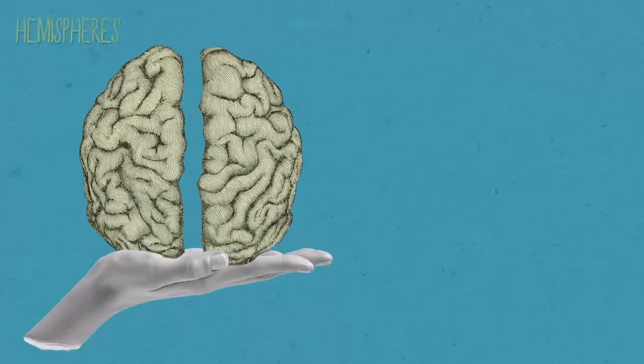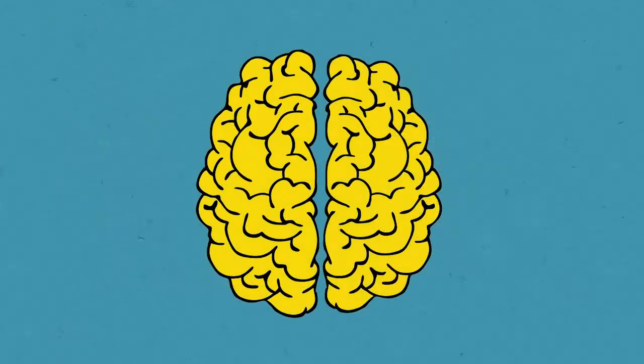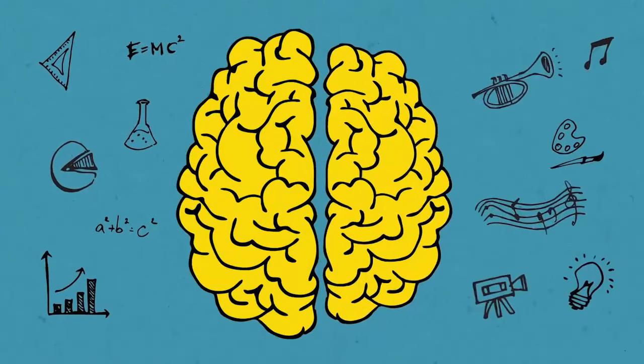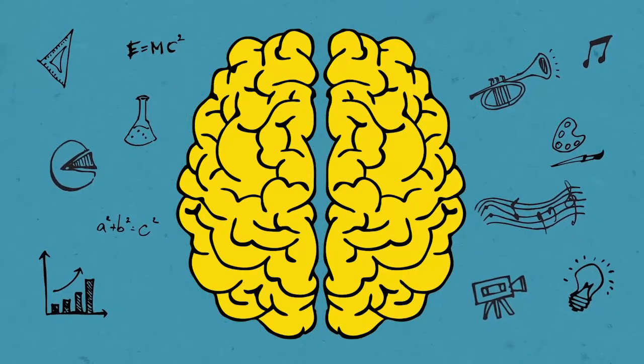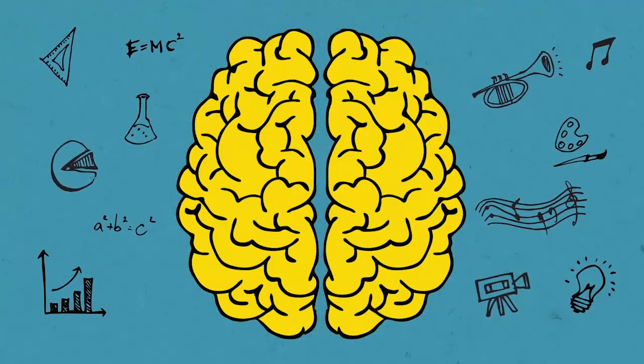The brain is made up of two hemispheres, which are connected by the corpus callosum. The belief that the left hemisphere is more analytical and the right more creative is one of the most widespread myths about creativity. But it is not exactly like that.